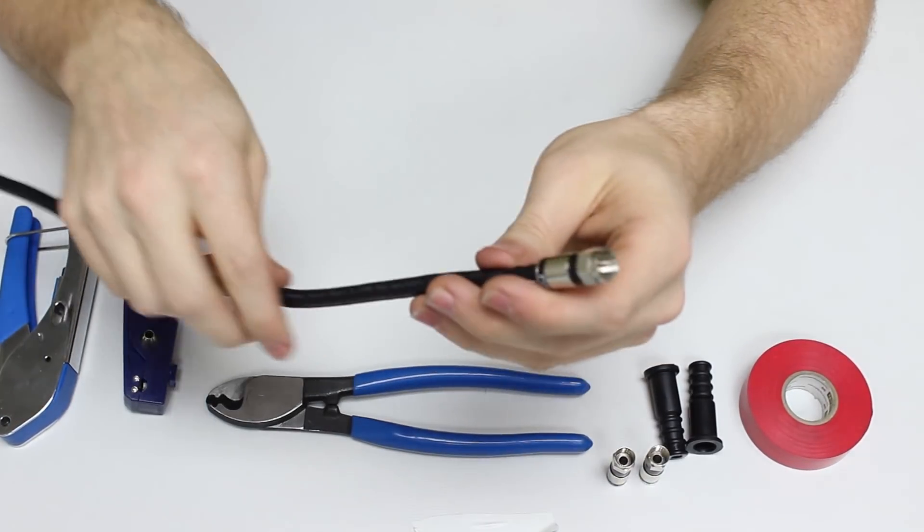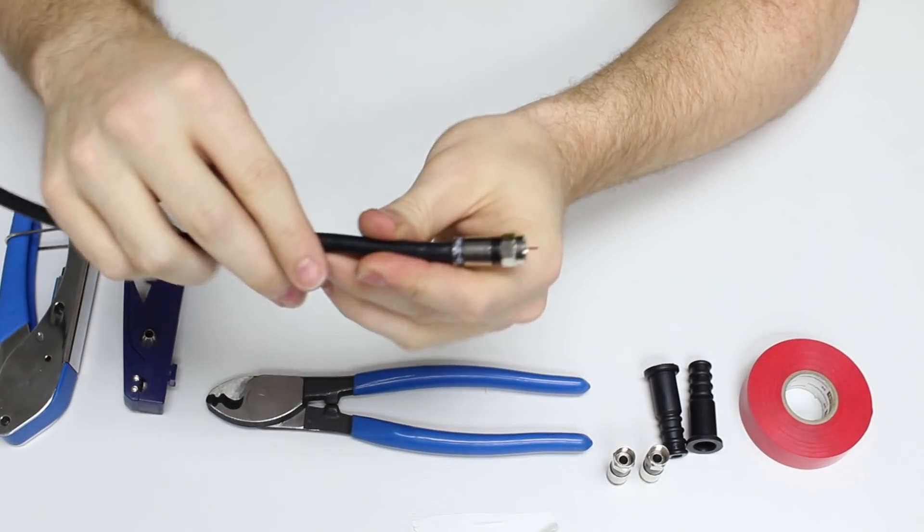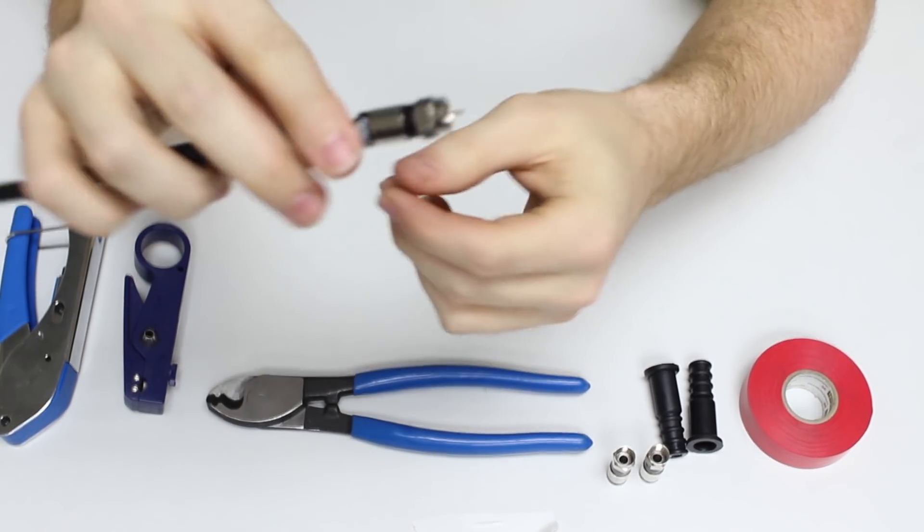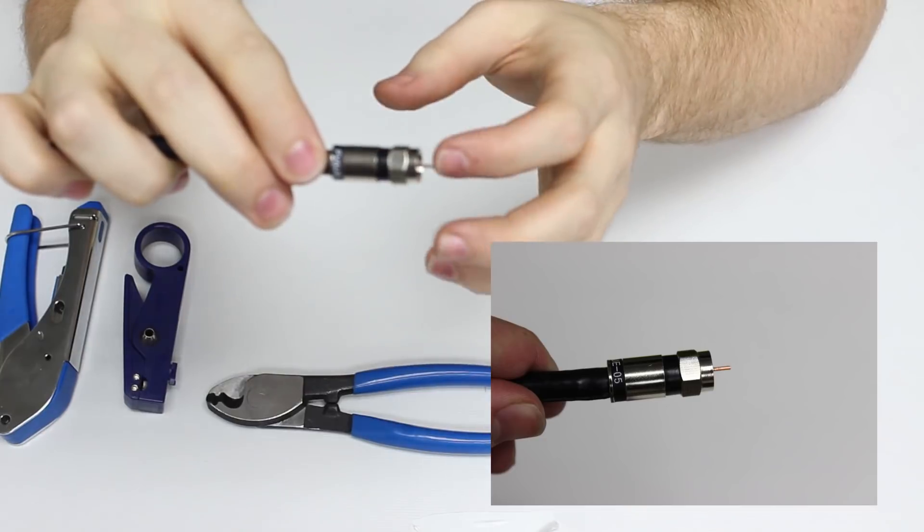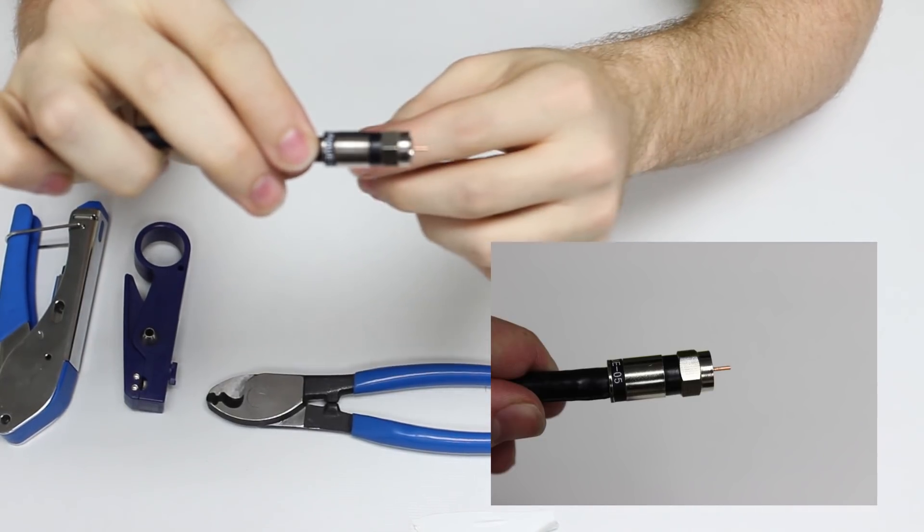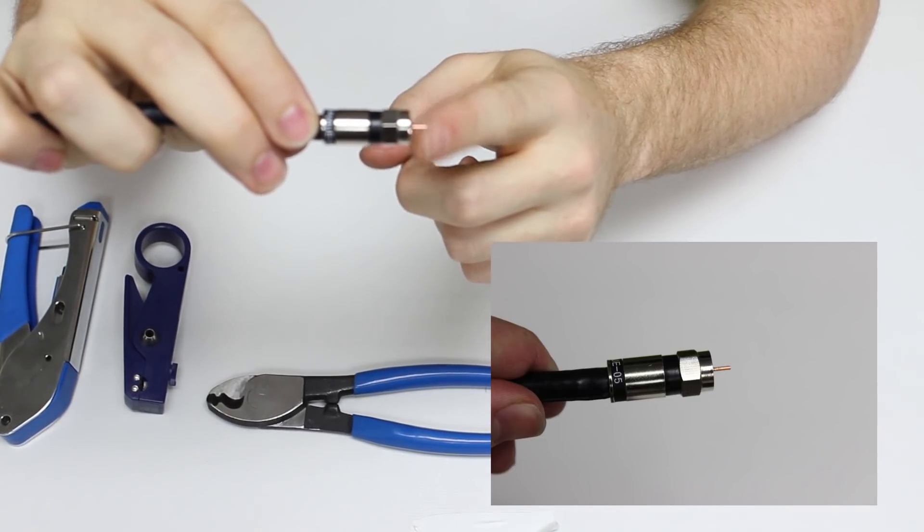Okay, so a few examples of what bad looks like is a few have been demonstrated here. The ideal situation is you want about a sixteenth of an inch passed on your center conductor here, on your center core.